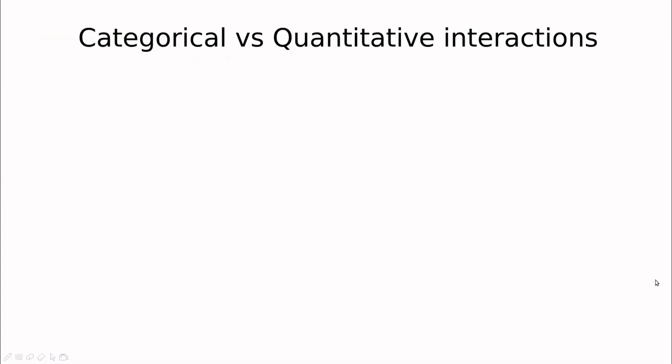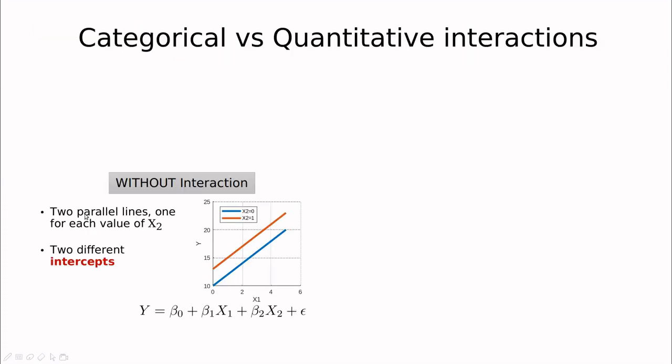So how can we deal with that? First, let's take a look at what happens when we don't have any interaction. Imagine that x2 is a factor. As you can see here, this linear regression means that basically we have this straight line for x1 and we are changing the intercept. The intercept is beta zero when x2 equals zero, and the intercept is beta zero plus beta two when this factor equals one.